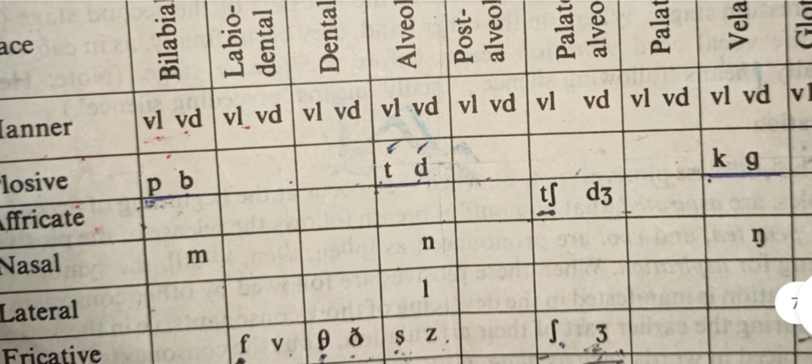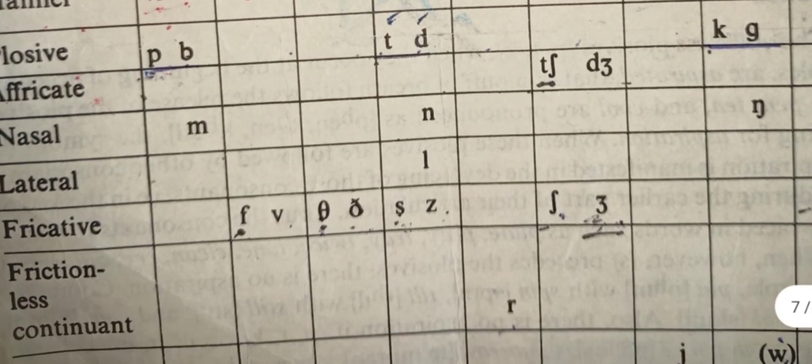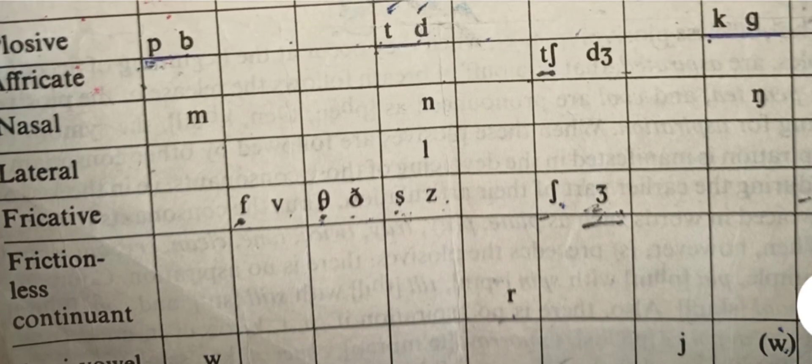One more photograph is there for how the sounds are produced - 44 sounds of English language, where they are produced. Sounds are produced in plosive manner, then affricates, nasal, lateral, fricative, and frictionless continuant semi-vowels are there. Then their place of articulation is there: bilabial, labiodental, dental, alveolar, post-alveolar, then velar and glottal. All these you must know. A complete picture I have given you. You can take its screenshot for remembering them.